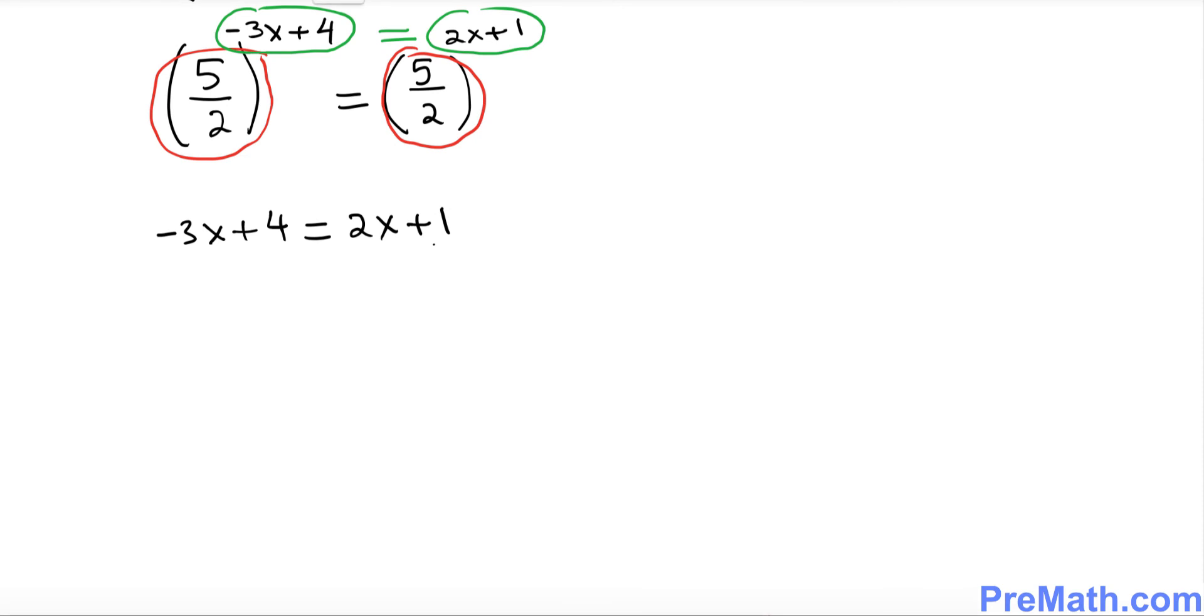Let's go ahead and simply solve for x. So I'm going to add 3x on both sides, so this is gone. Simply we got 4 equals to 5x plus 1.